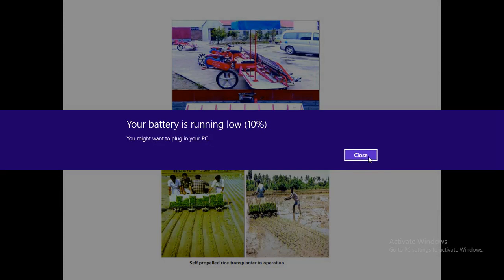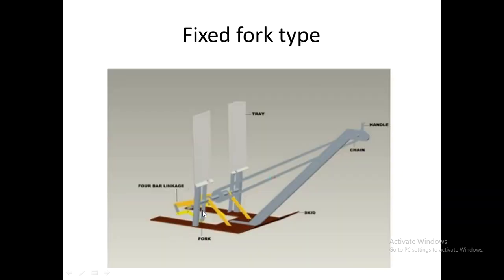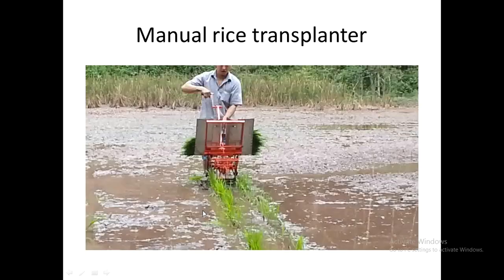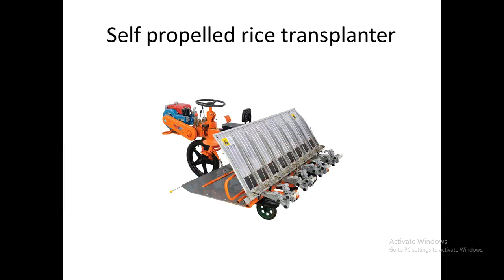Here we can see pictures of the different types of rice planters, including the self-propelled rice transplanter and the mat given as input for the transplanter. Other types shown include the manual type rice planter, the power tiller-mounted rice transplanter, and the self-propelled type of rice transplanter.